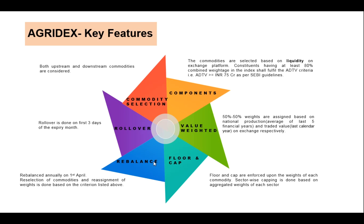We have sector floors and caps to ensure adequate diversification across subgroups like oil and oil seeds, food grains, and spices. If a sector's weight falls too low, we introduce a sector floor. Also, one sector should not go above 40%, so we put a cap of 40% at the sector level. At the commodity level, we don't want any commodity's weight falling less than 3% or more than 20%, so on the commodity level the floors and caps are 3% and 20% respectively. This is done to ensure the index is well diversified.